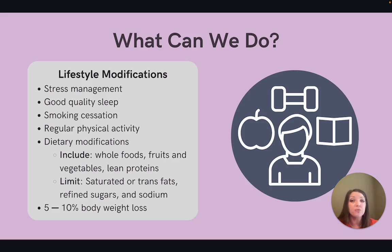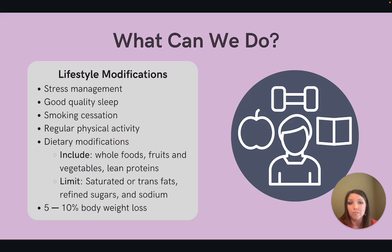Incorporating healthy foods in the diet is another important piece for reducing the risk of metabolic syndrome. A healthy diet should emphasize whole foods, fruits, vegetables, and lean proteins, and limit saturated or trans fats and any refined sugars and sodium. A modest weight loss of five to ten percent body weight can also make a big difference. All of these lifestyle modifications play a vital role in prevention of metabolic syndrome and improving cardiovascular risk.